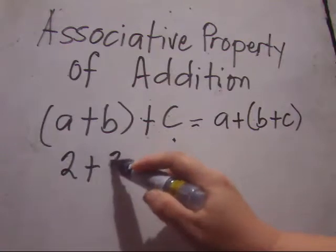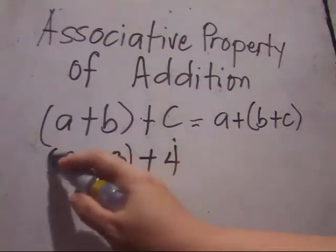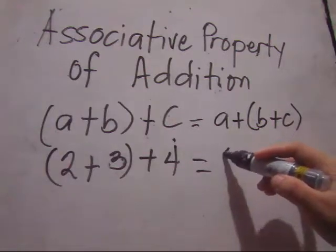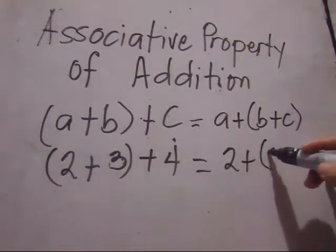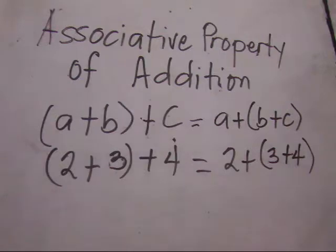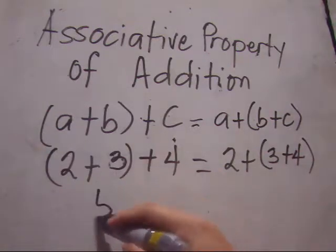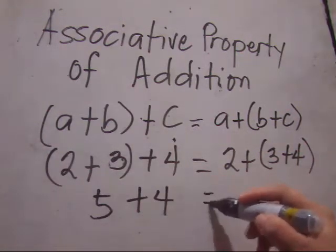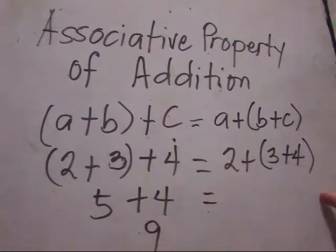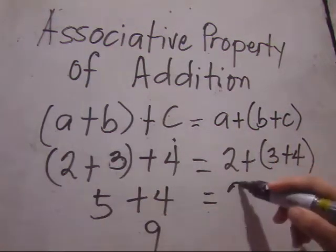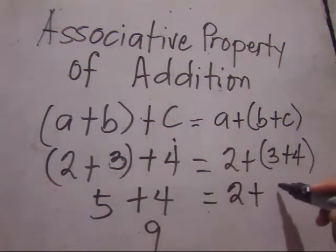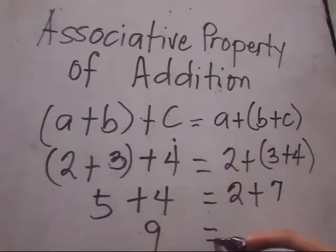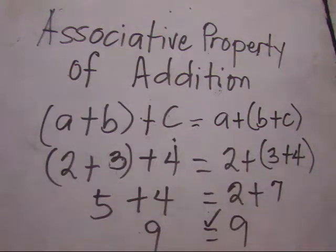Let's take an example: (2 plus 3) plus 4 will be equal to 2 plus (3 plus 4). Even if I interchange the grouping, it will still have the same value. Let's solve: 2 plus 3 is 5, plus 4 equals 9. On the other side, 3 plus 4 is 7, and 2 plus 7 is also equal to 9. So they both have the same value.